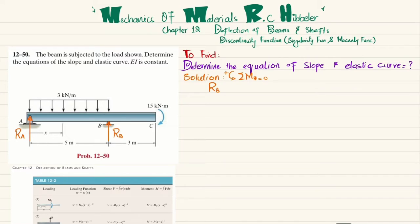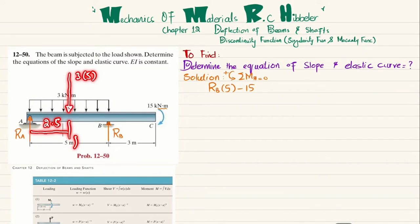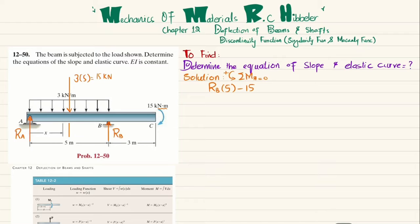The second moment is the external clockwise moment of 15 kN·m (negative). The third moment is from the uniformly distributed load, converted to a point load: 3 × 5 = 15 kN acting at 2.5 m from A (clockwise, so negative). The equation becomes: Rb×5 − 15 − 15×2.5 = 0, giving Rb = 10.5 kN.